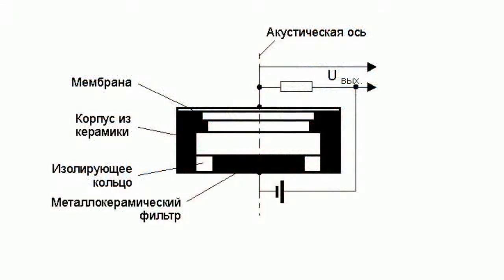In a condenser or electric microphone, the sound affects the membrane, which is one of the capacitor plates. The membrane is made of a polymer tape with a metallization layer applied over it. As power is applied to the microphone and the capacitor is charged, the air vibrations affect the membrane and thus cause a change of capacitance.